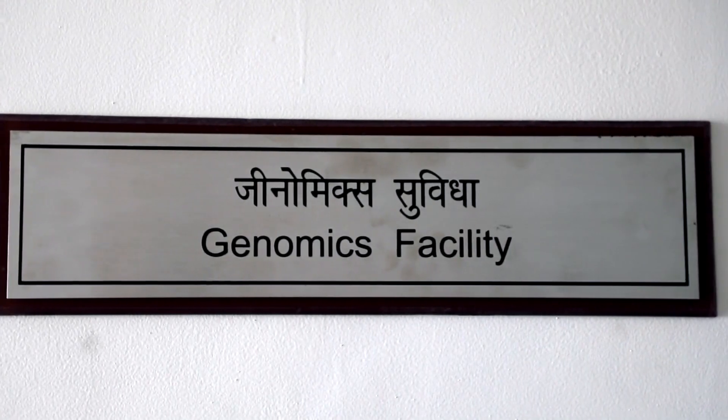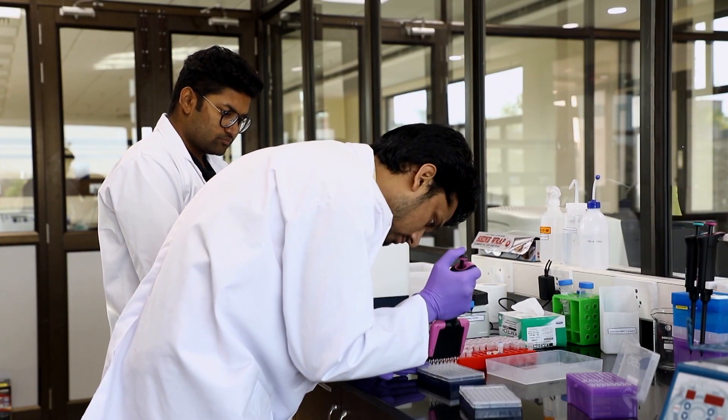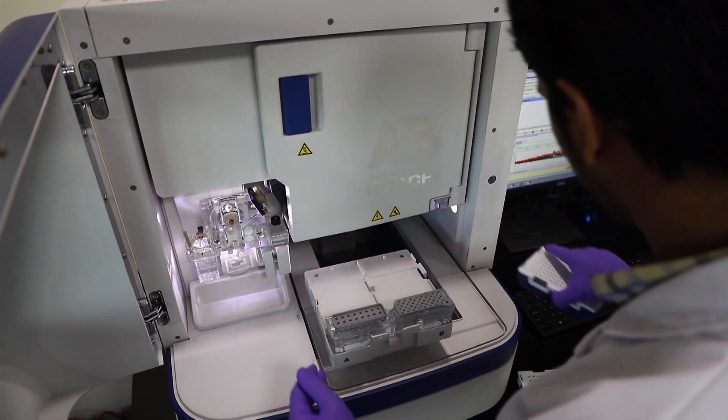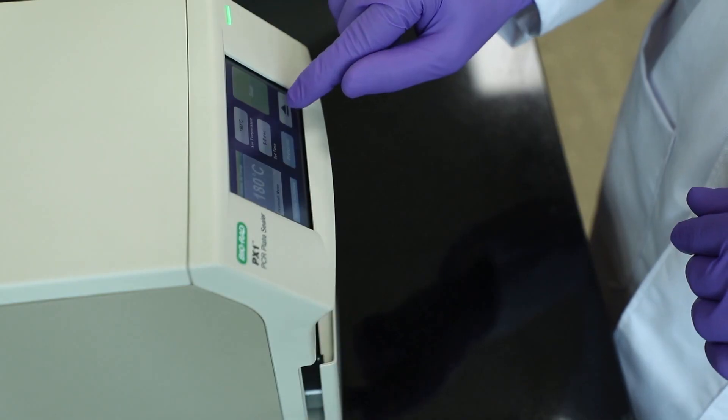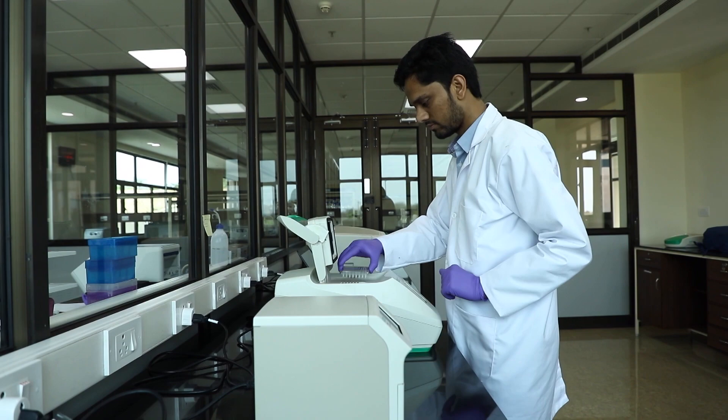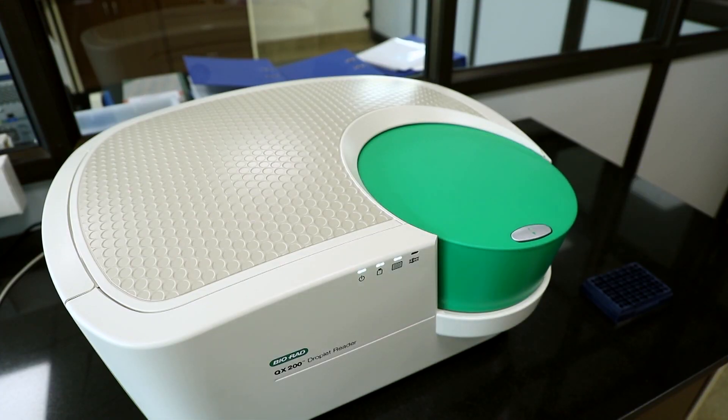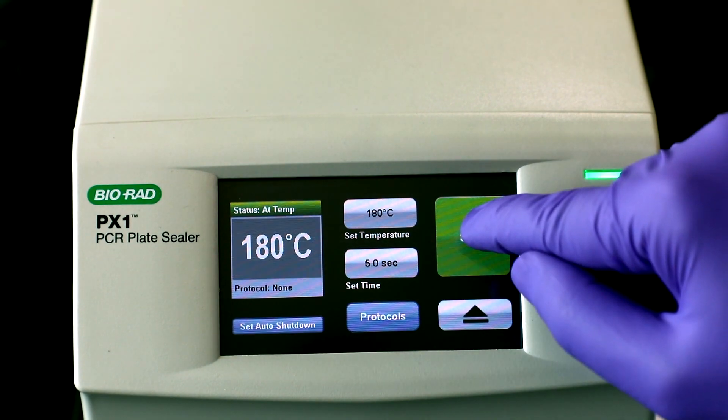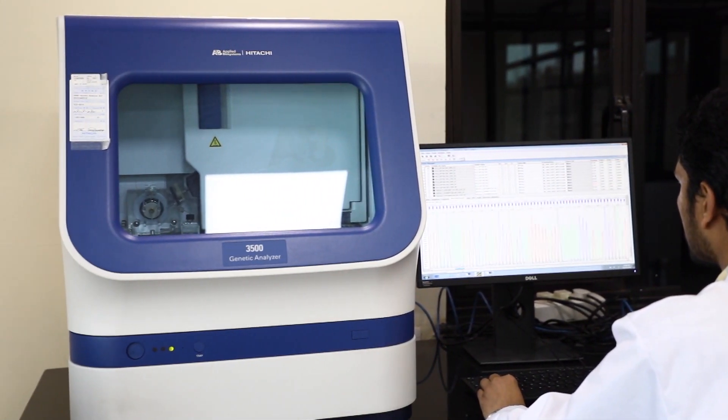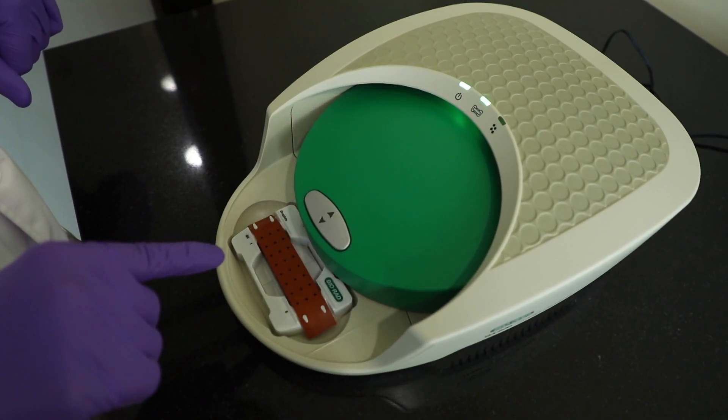One of the crucial facilities of ATPC is the Genomics facility. Genomics facility provides services related to DNA sequencing, pathogen analysis, biomarker detection, gene expression analysis, copy number variations and rare mutant detection using DNA sequencer and droplet digital PCR. This facility is equipped with ABI 3500 genetic analyzer and droplet digital PCR.